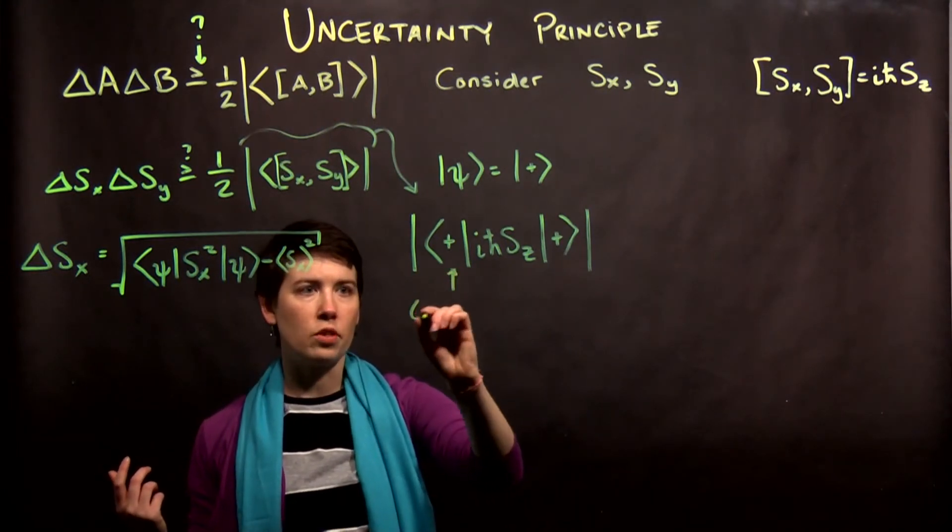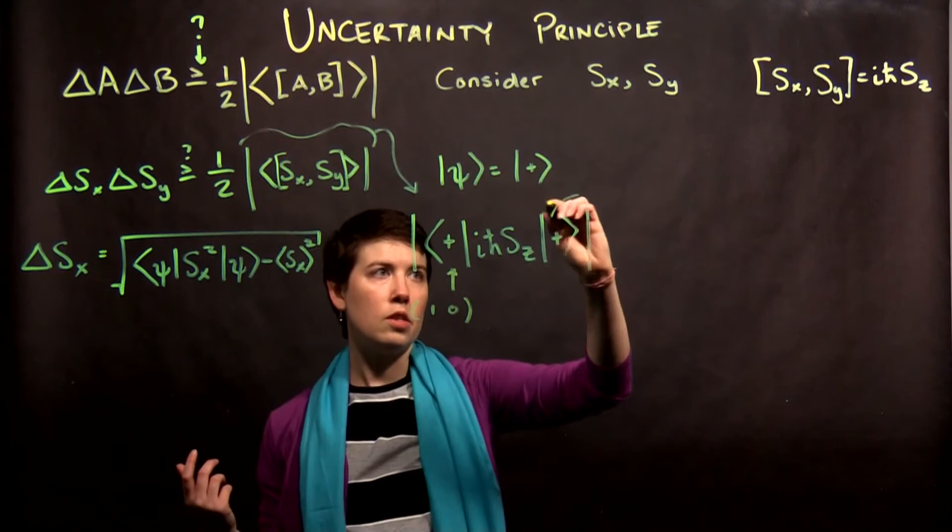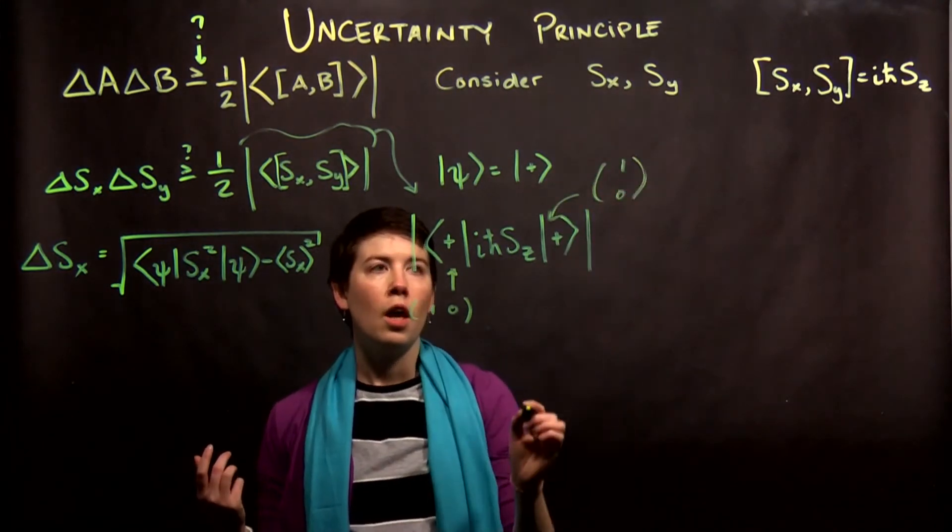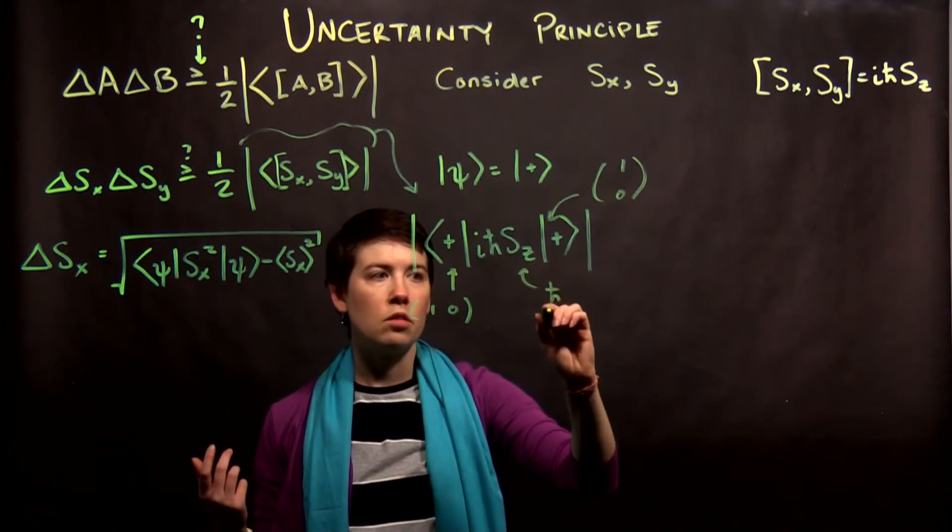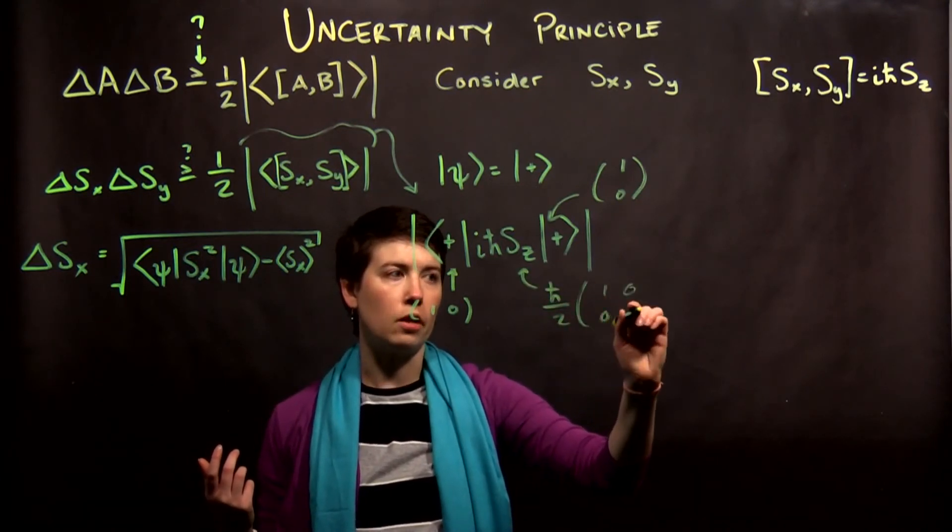So, this is going to be 1, 0, this is going to be 1, 0, and then, so i h-bar is separate, Sz is h-bar over 2, 1, 0, 0, negative 1.